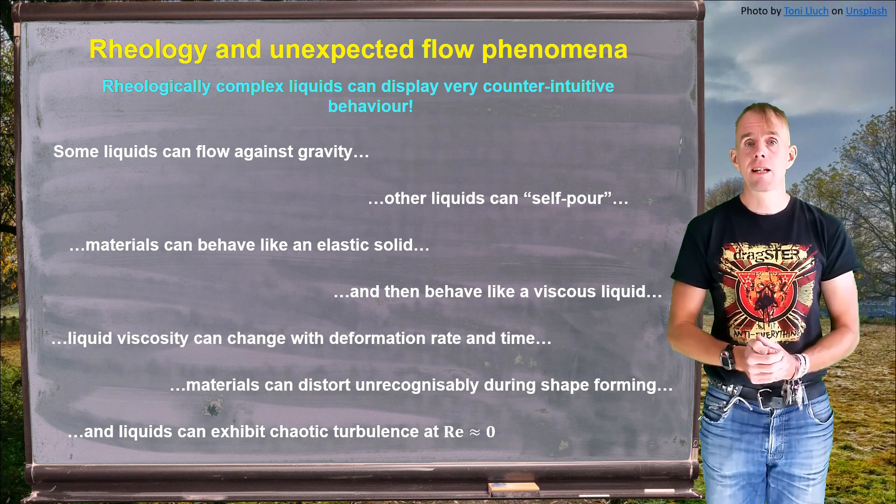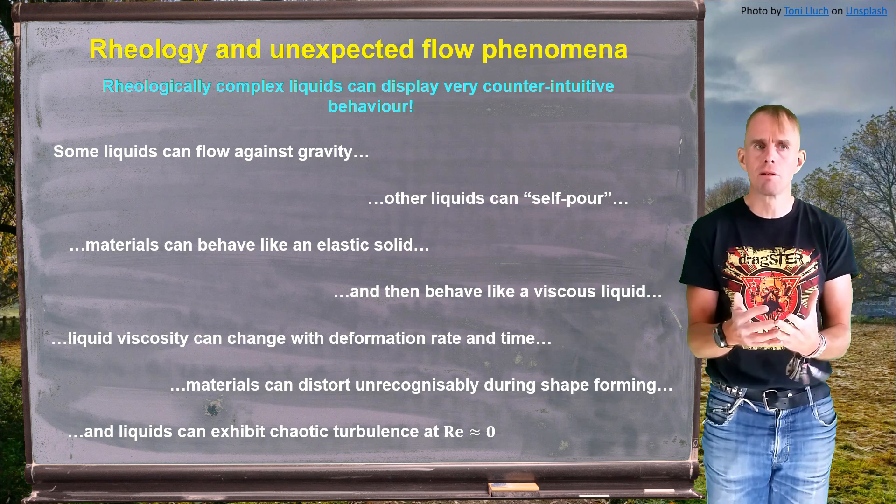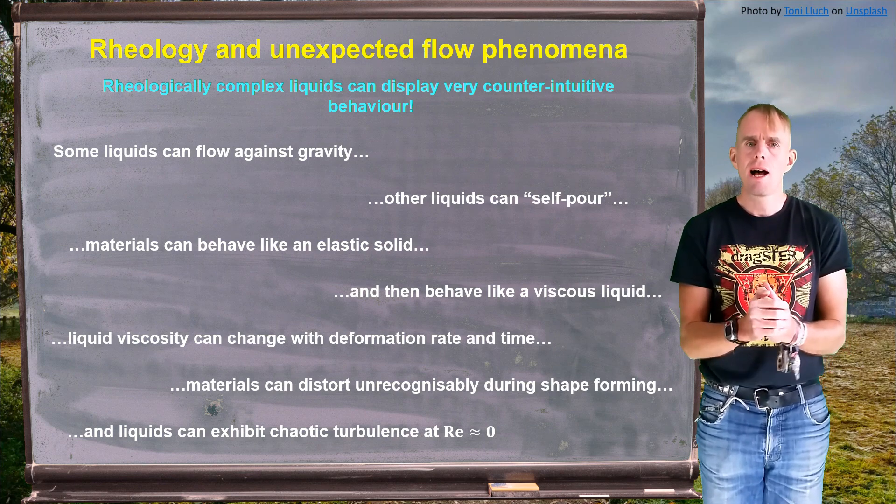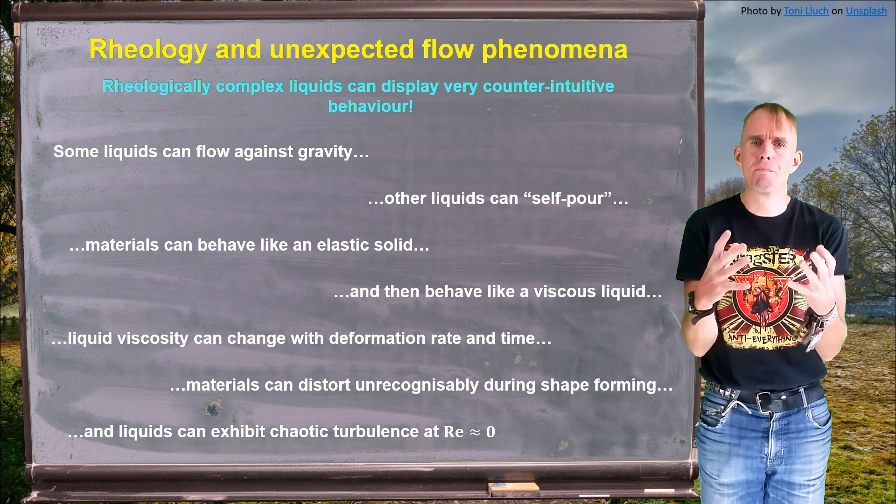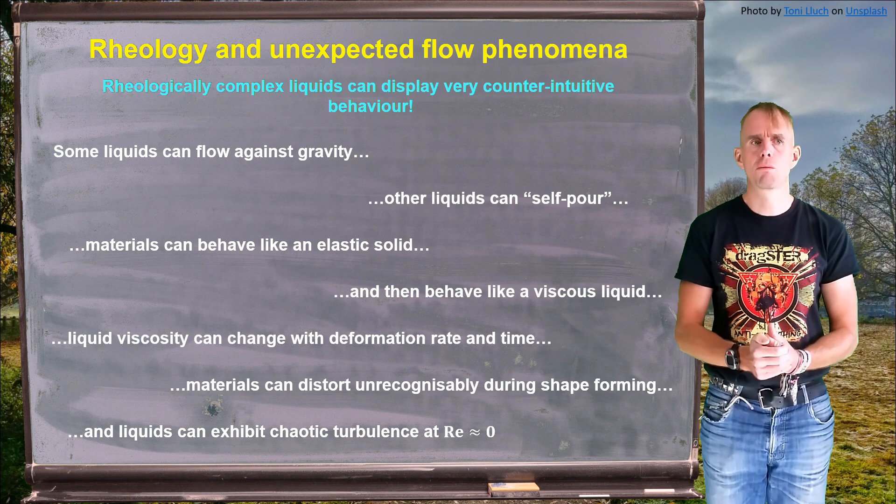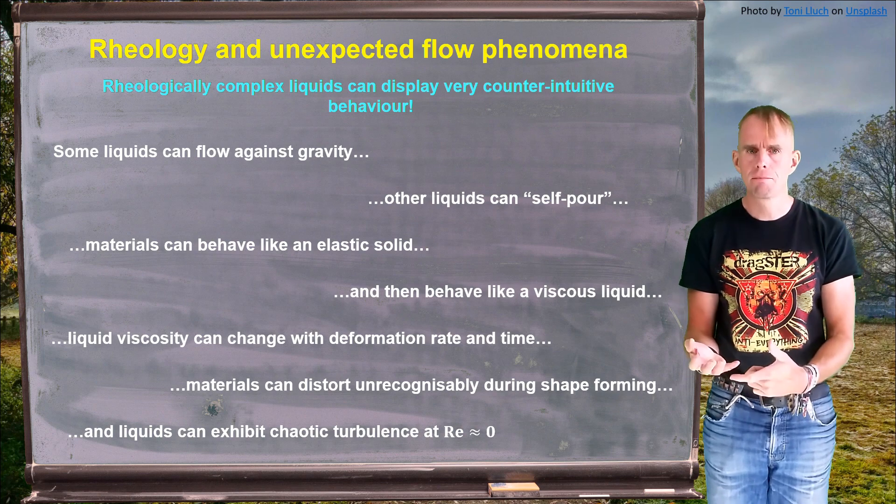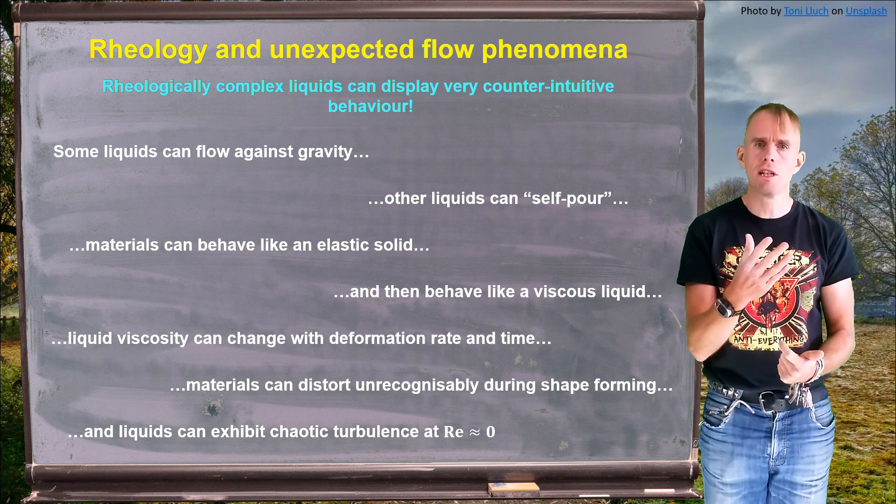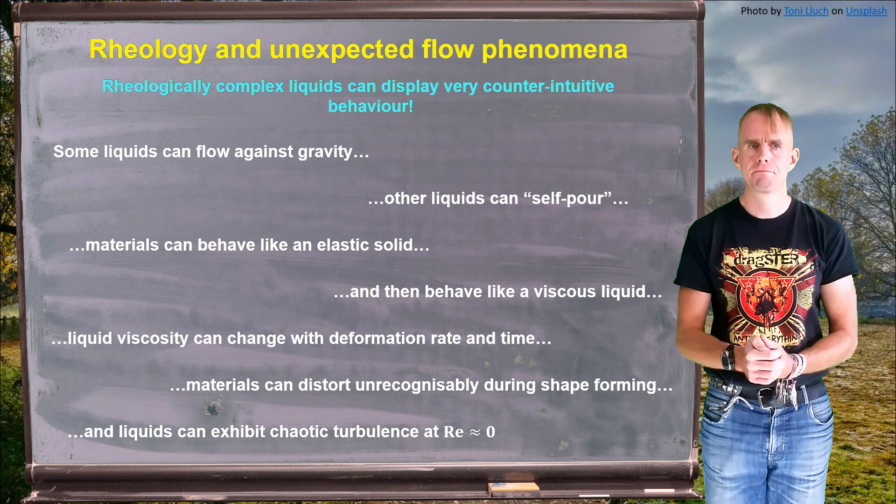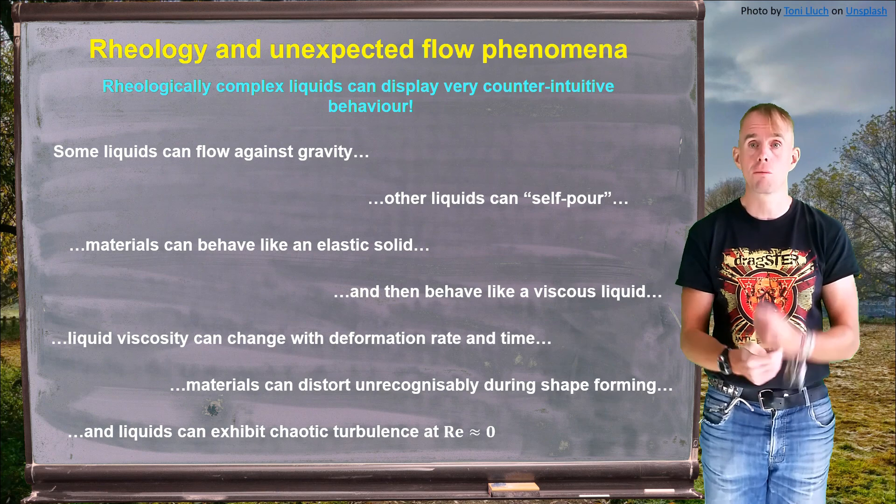Some materials can behave like elastic solids in some states of stress and then behave like viscous liquids in others. Clay is an example of this. You have an elastic solid when the yield stress has not been reached and then you have a viscous liquid as you shape form. A very thick, viscous, highly viscous liquid. We also see materials where liquid viscosities change with deformation rate. Paint, for example. But also change with time. And so the restoration of an original viscosity can take quite some time. And that's an example of a thixotropic material.